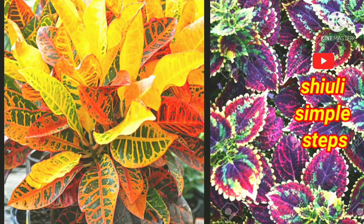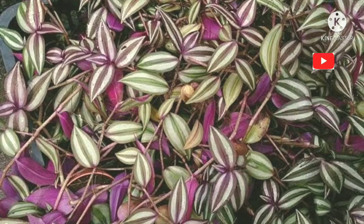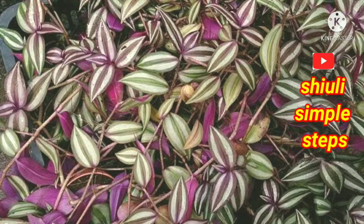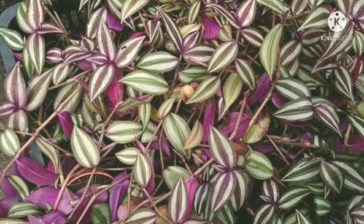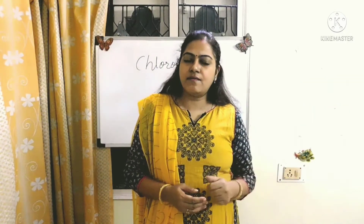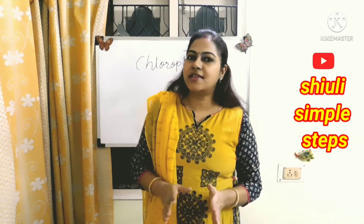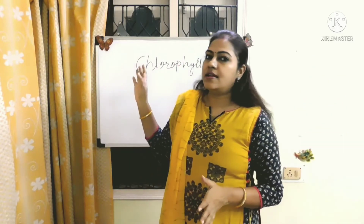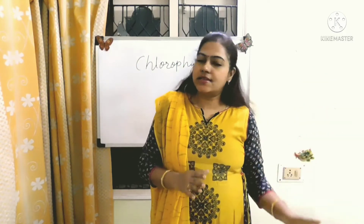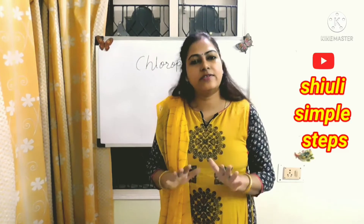Have you seen these types of plants in your garden? These plants do not have green leaves — they have different colored leaves like orange, yellow, and purple. So how do they make their food? How do they make their food if chlorophyll is not present in them? But chlorophyll is also present in these types of plants; the pigment color is just not green.